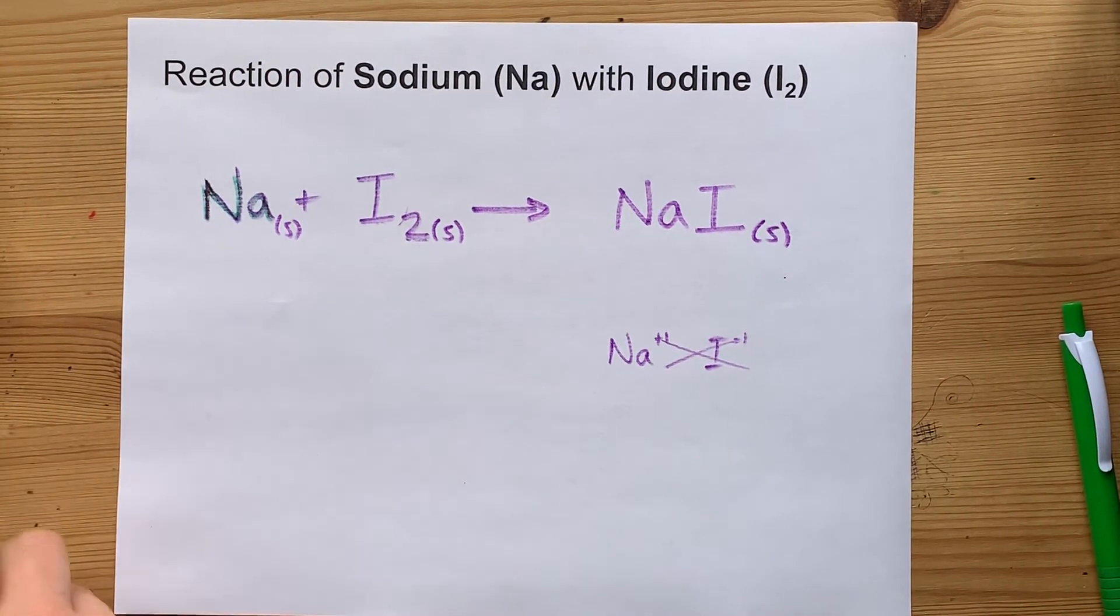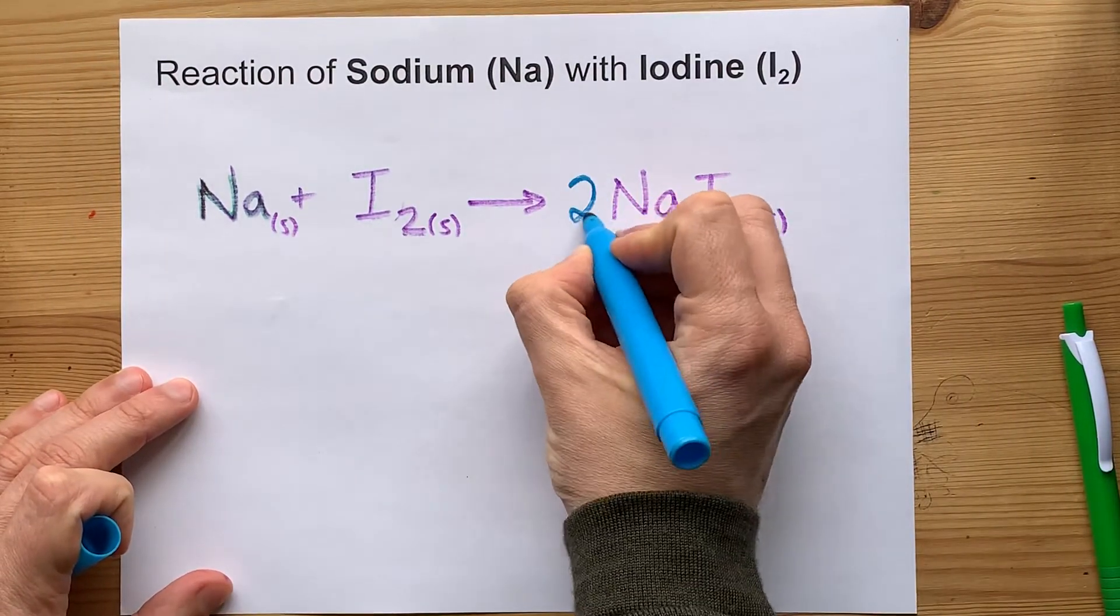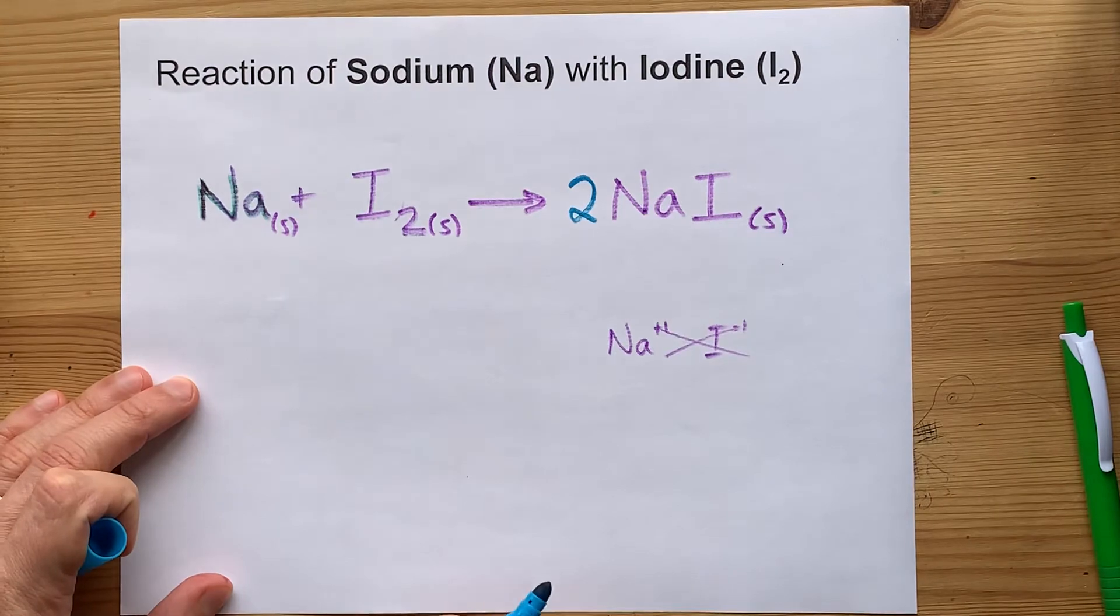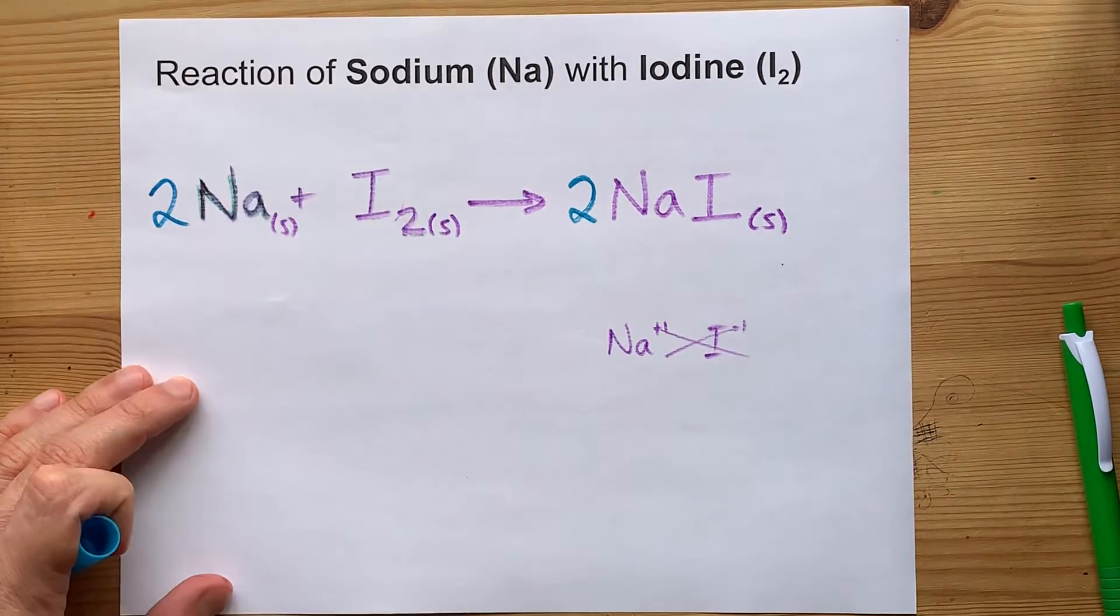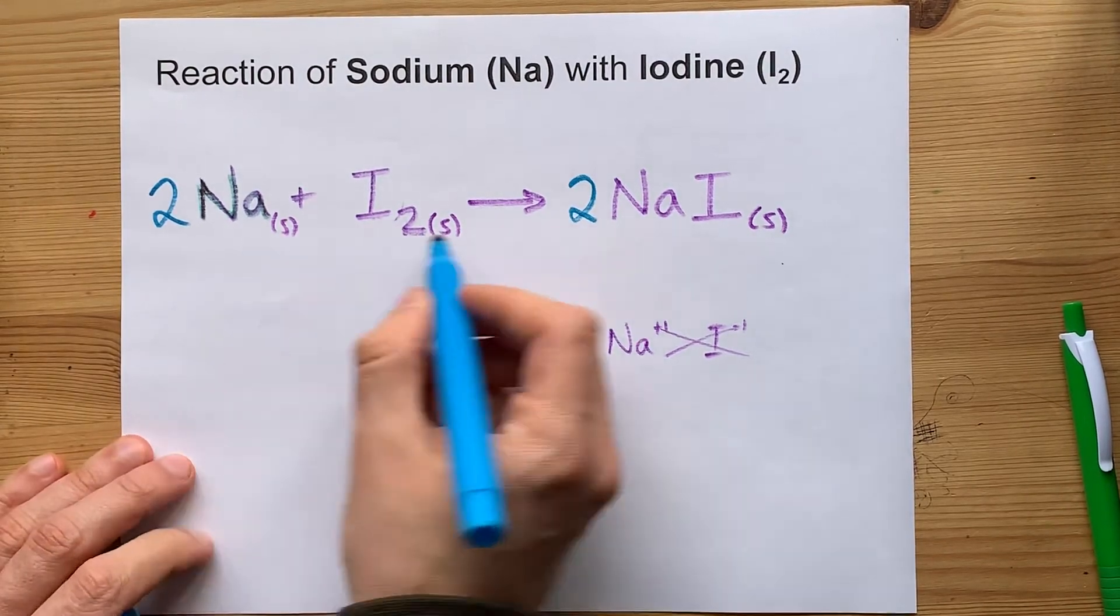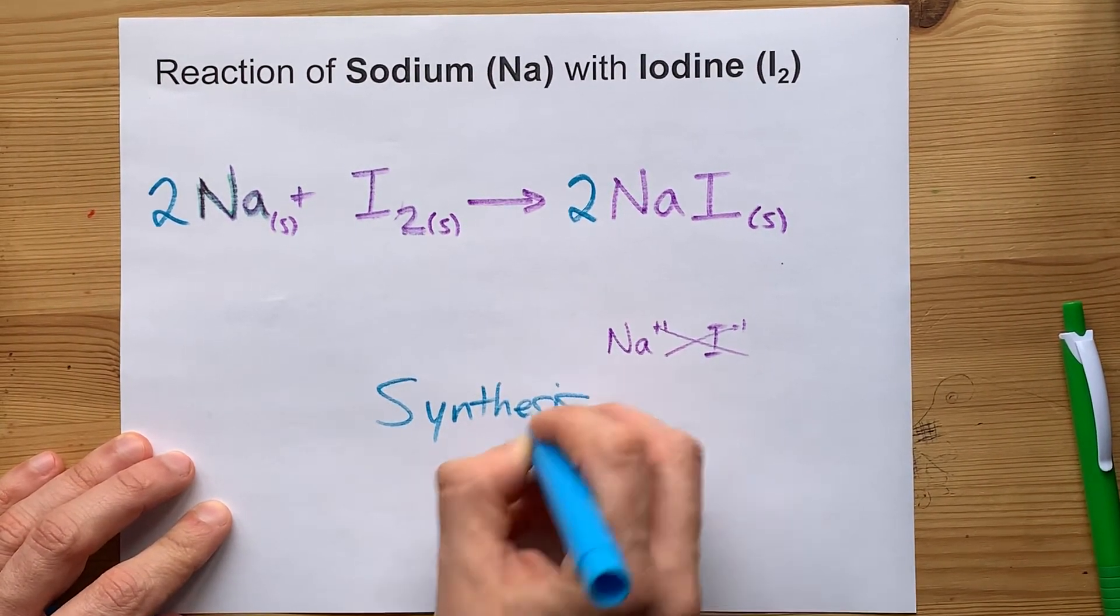And if you wanted to balance it, we have two iodines on the left, two iodines on the right. Now that I put that two there, two sodiums on the right, need two sodiums on the left. Because two things are becoming one thing, we call it a synthesis reaction.